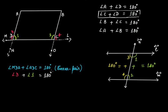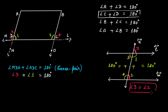Now looking at angle 3 and angle 2: angle 3 is on the exterior and angle 2 is on the interior, so they form a pair of corresponding angles. By the property of parallel lines with a transversal, corresponding angles are equal, therefore angle 3 equals angle 2.